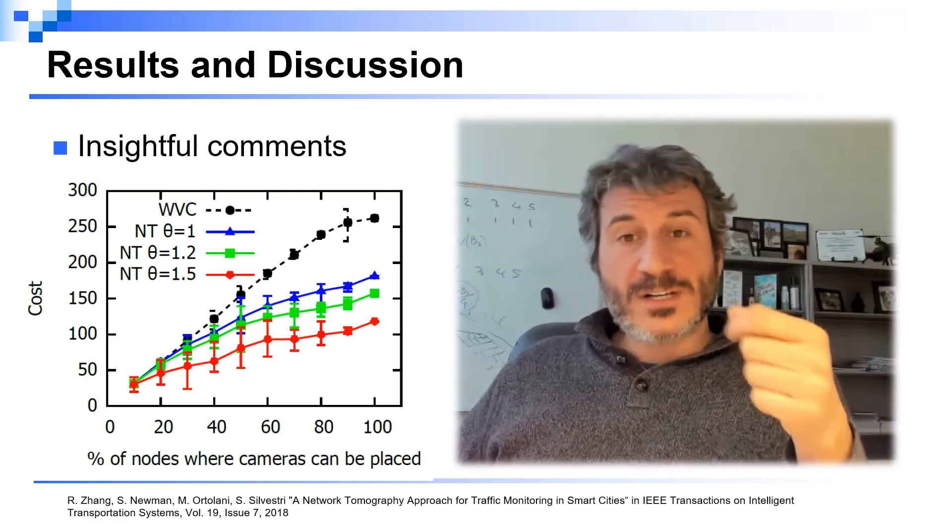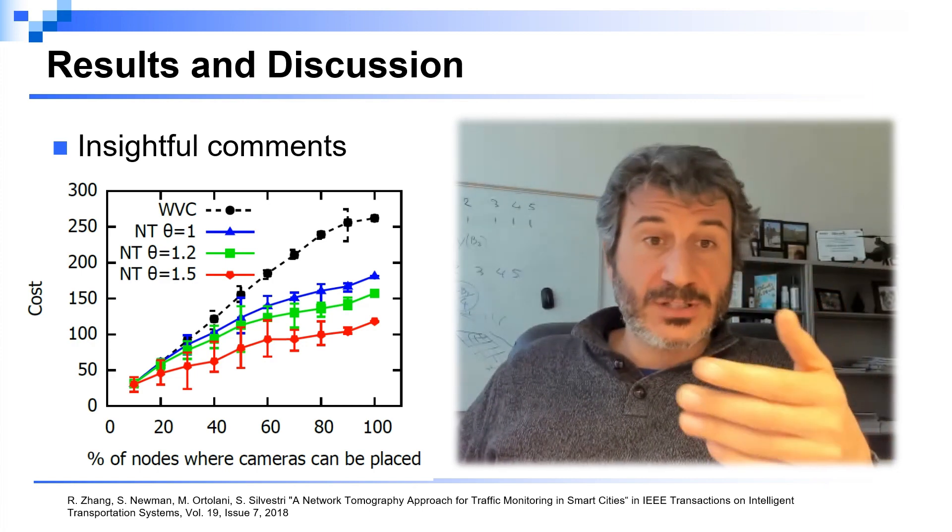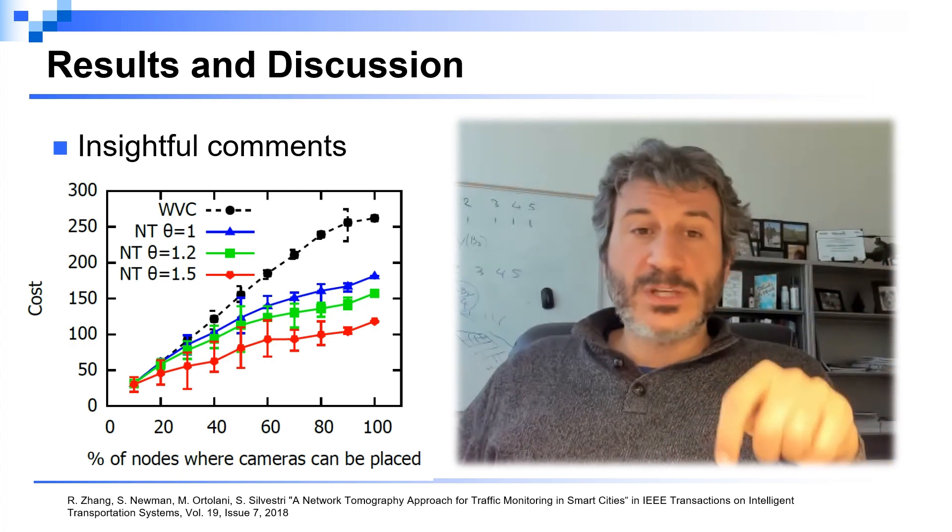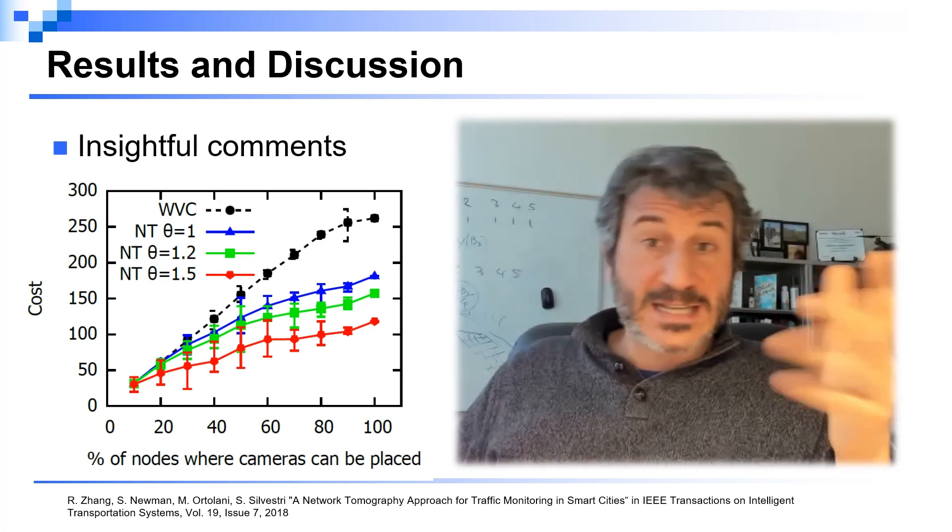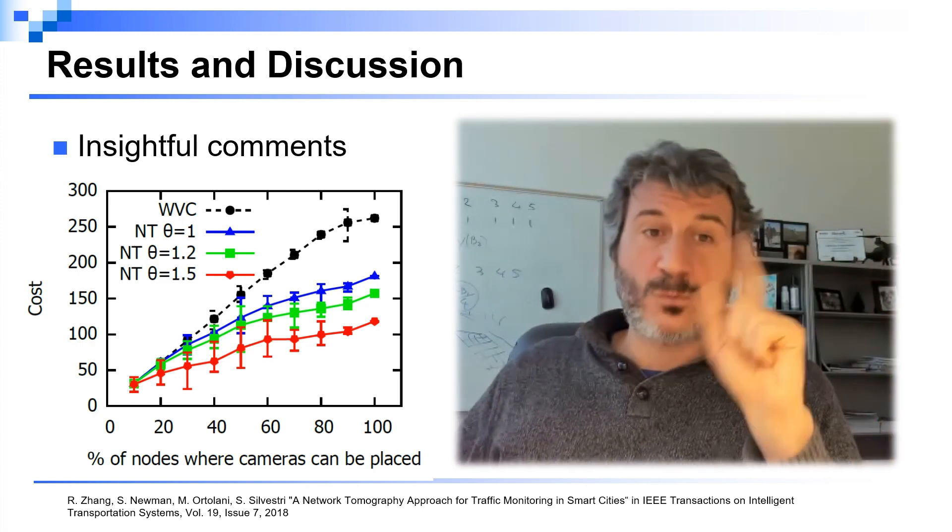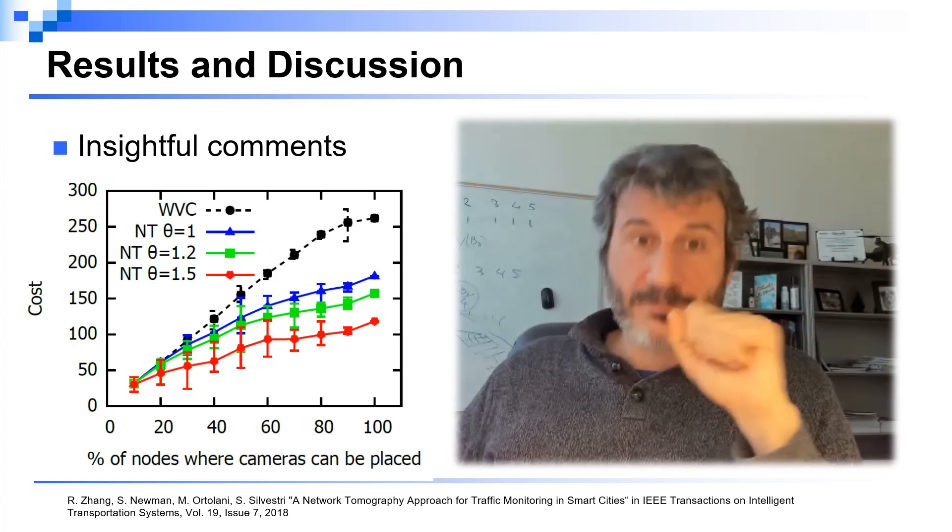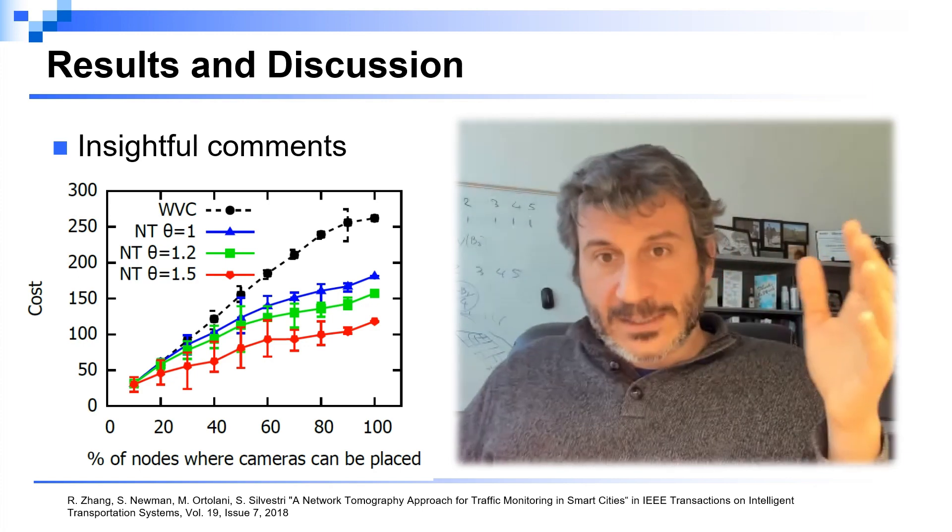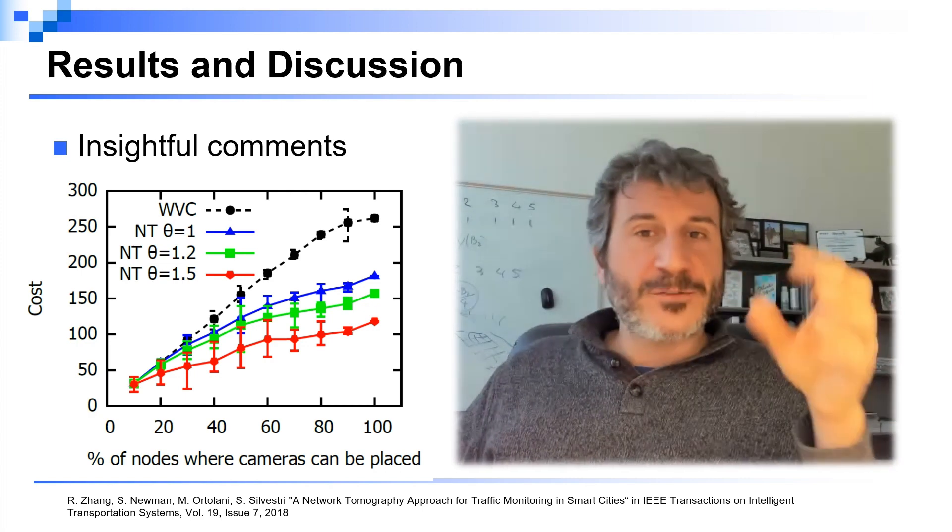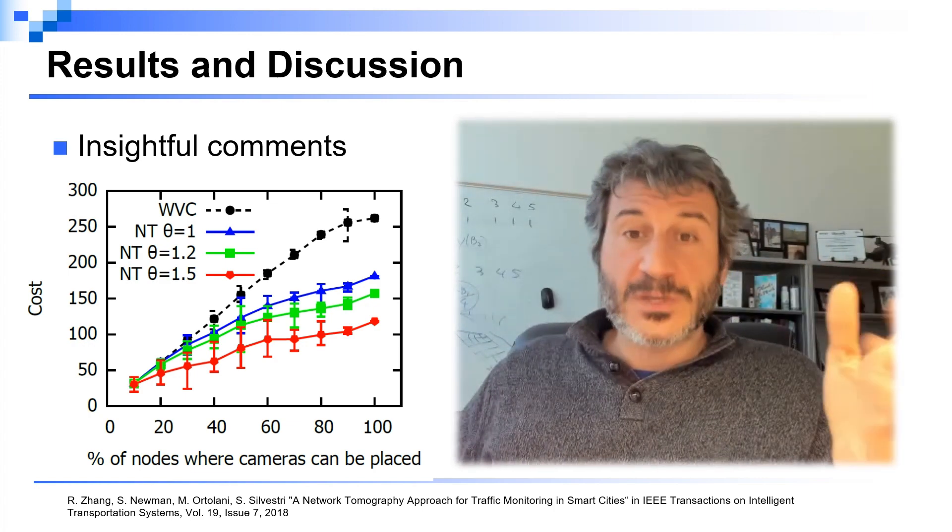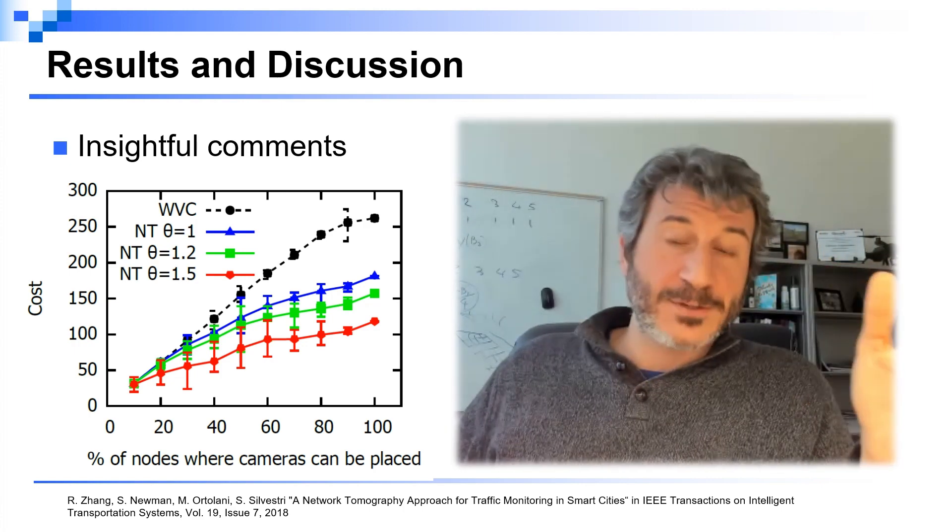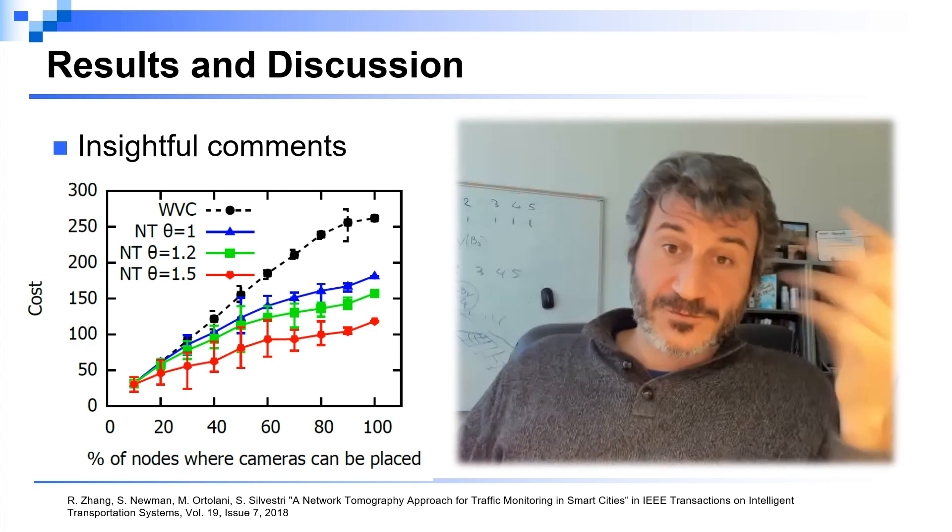I want to provide you now an example to go over some common mistakes that are made when an experimental results section is written. Here we can see a graph from one of our previous papers, where we are increasing the number of nodes where you can place cameras in this approach and studying the cost of doing that under different comparisons. We have one performance comparison approach called WBC, which is the black line, and we have our approach called NT. Our approach at that time was parameterized by a certain parameter theta. Since the performance of theta actually changes a lot the performance of the algorithm, we studied different settings of theta from 1 to 1.5.